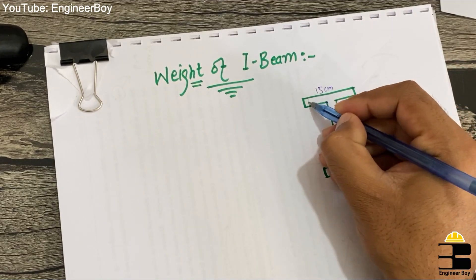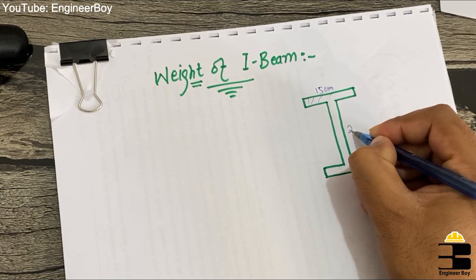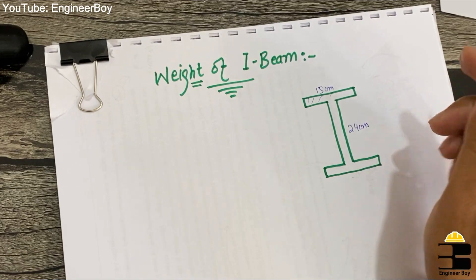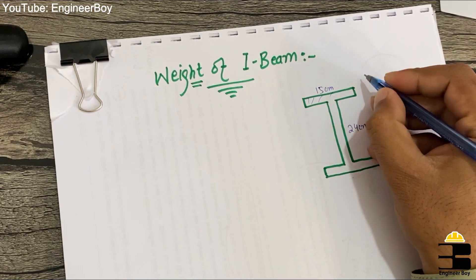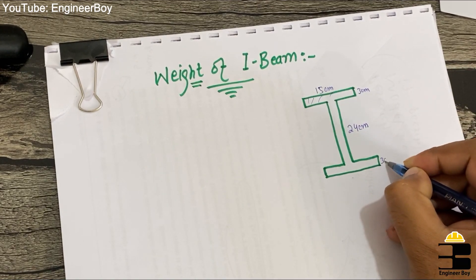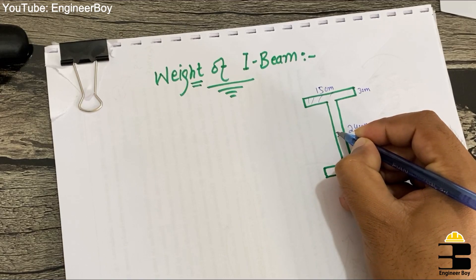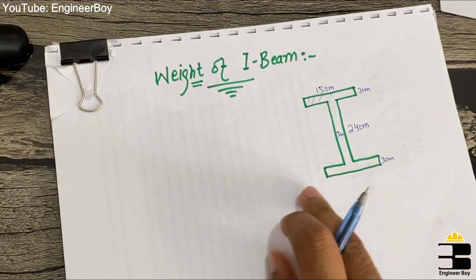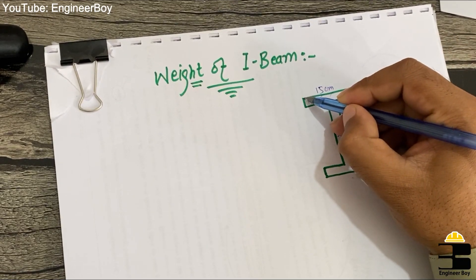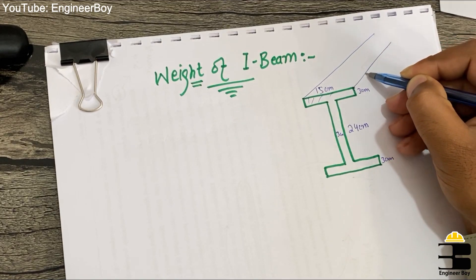This part is called the flange, and this vertical part is the web. Let's say the web height is 24 centimeters. The thickness of the flange is 3 centimeters, and the web thickness is also 3 centimeters. Make sure you're familiar with these cross-section terms.